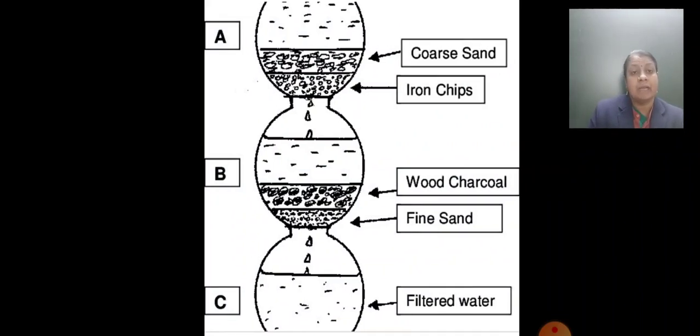Now this is the slide of how to clean water in olden days. That is a traditional method. Here it uses some steps. What they use is coarse sand, iron chips, wood charcoal, fine sand. The last is filtered water.